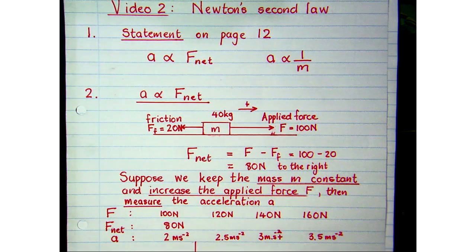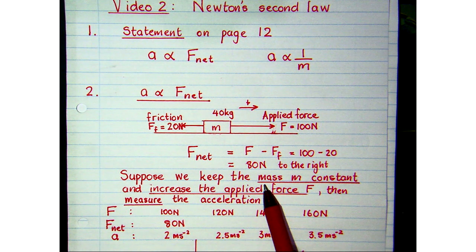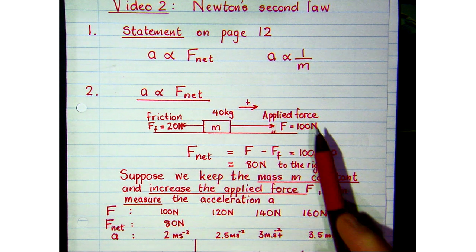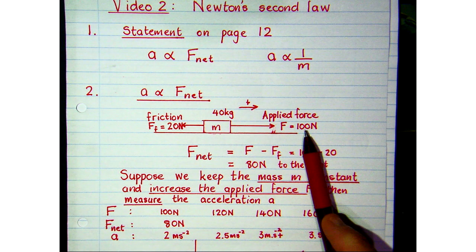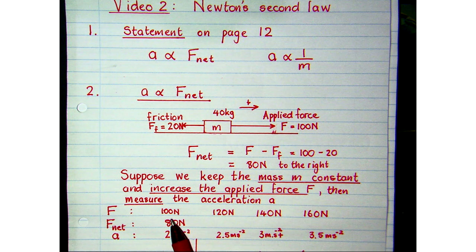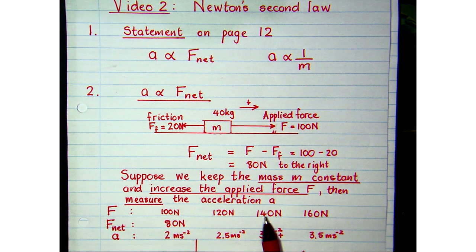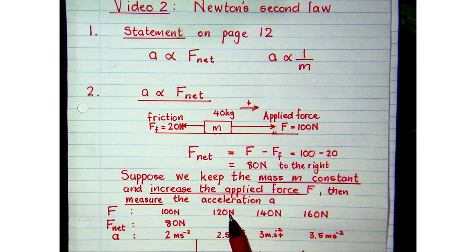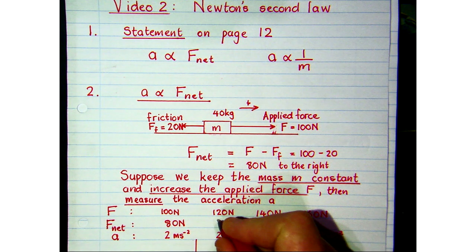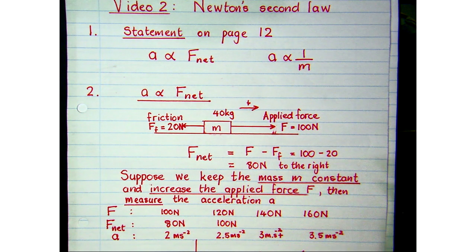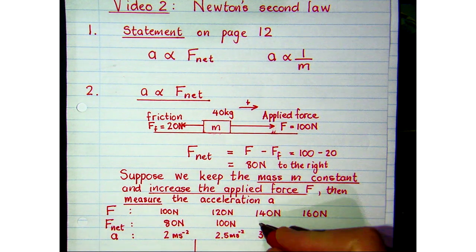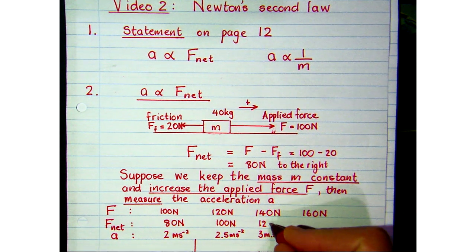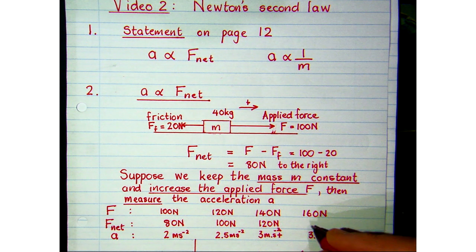In this investigation we kept the mass constant and increased the applied force: 100, 120, 140, 160 newtons. As we increase the applied force, the net force also increases. With an applied force of 120 N the net force is 100 N to the right; with 140 N applied the net force is 120 N to the right; and likewise for 160 N applied.